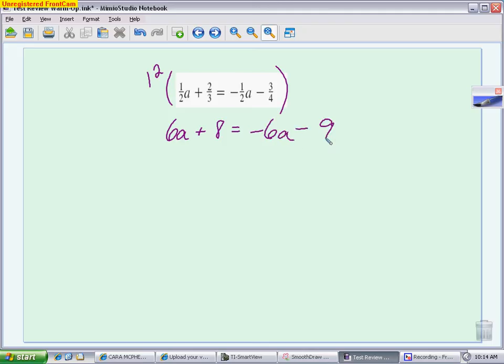Now it's a much easier problem. I can get my a's on one side by adding 6a, get my numbers on the other by subtracting 8. So I get 12a = -17 divided by 12. Negative 17 twelfths is perfectly acceptable. If you want to write it as a decimal you could, but there really is no need. This does not reduce. Try to get out of the habit of writing it as a mixed numeral. I know it's -1 and 5/12, but it's preferred to keep it in this form.